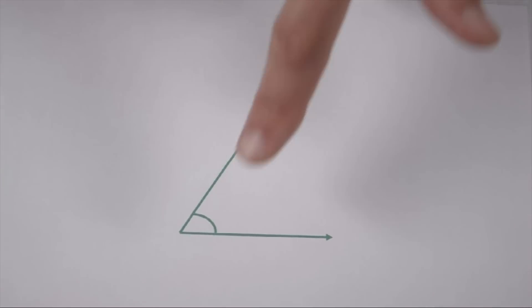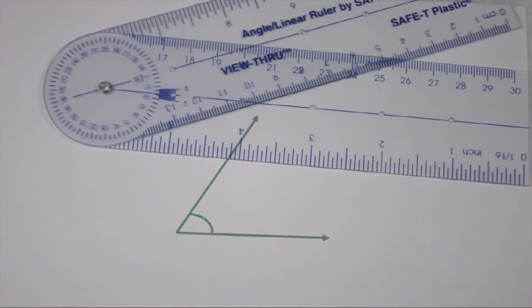From looking at this angle, we can see that it's an acute angle. So it's going to be less than 90 degrees. To find out exactly what it's worth, again, we can measure it with our angle ruler.